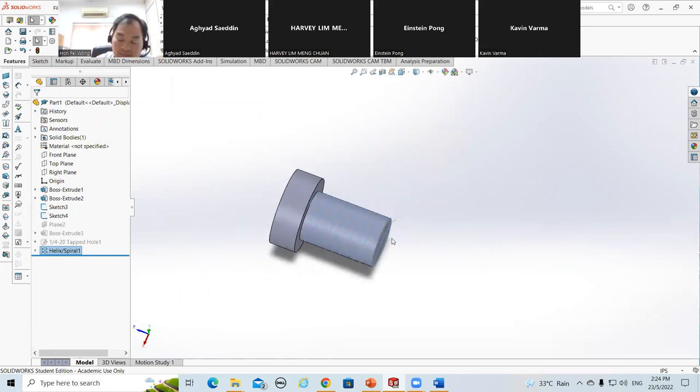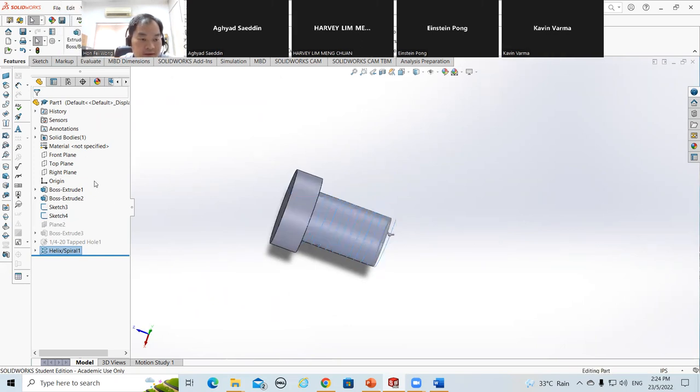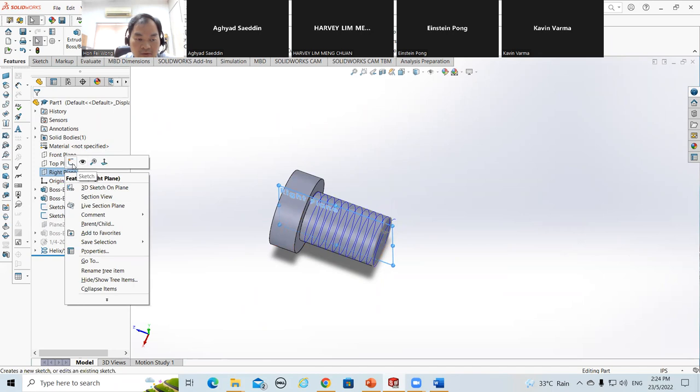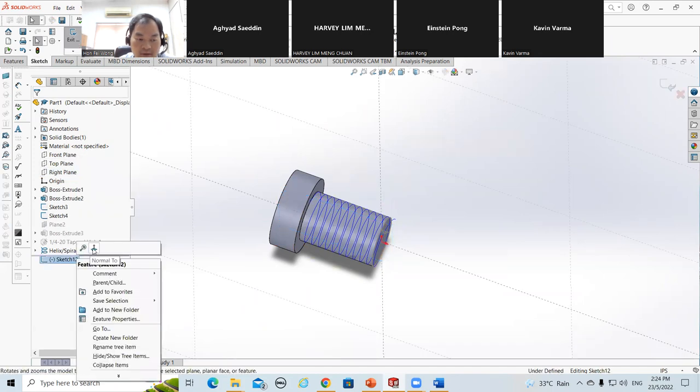So I got a spiral. The spiral is my path that I need to create a profile. Where's the profile? So I go to select, let's say, right here, the center of the screw. I'm going to go to sketch.